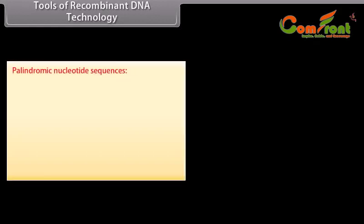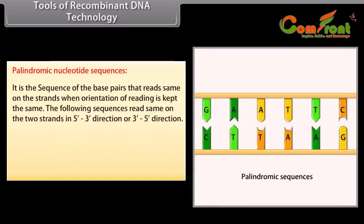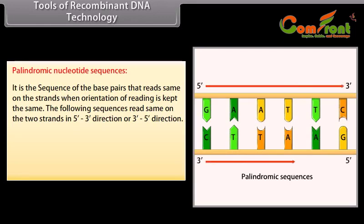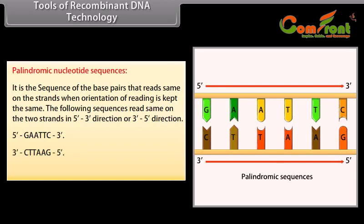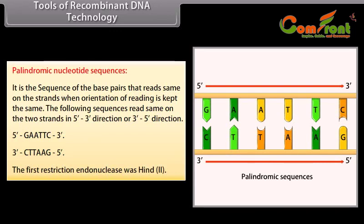Palindromic nucleotide sequences: it is the sequence of base pairs that reads the same on both strands when the orientation of reading is kept the same. For example: 5'-G-A-A-T-T-C-3' and 3'-C-T-T-A-A-G-5'. The first restriction endonuclease was HindII.